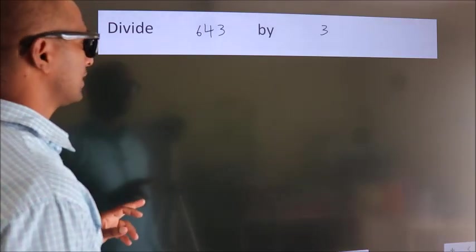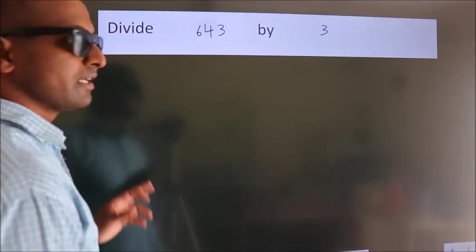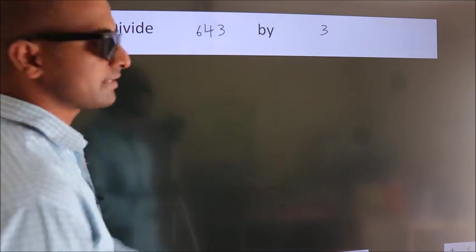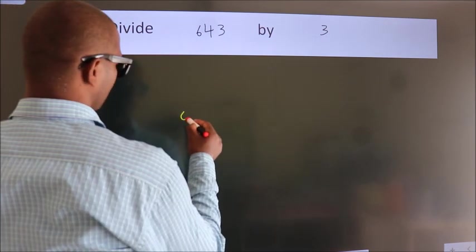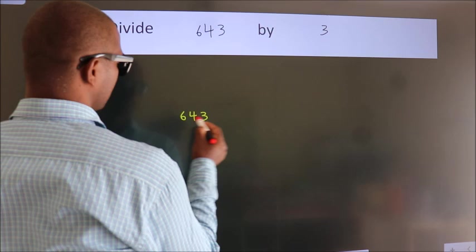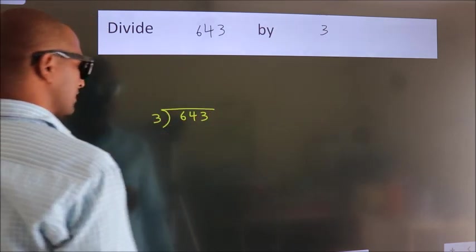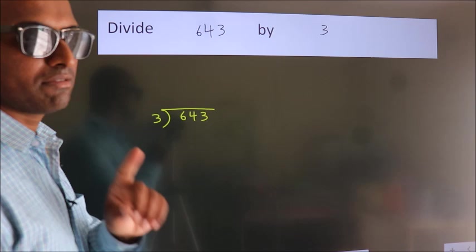Divide 643 by 3. To do this division, we should frame it in this way: 643 here, 3 here. This is your step 1.